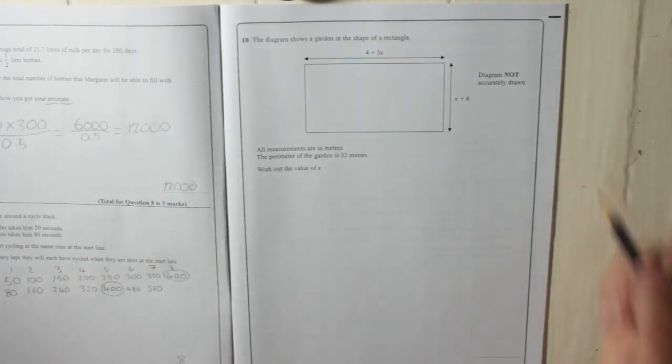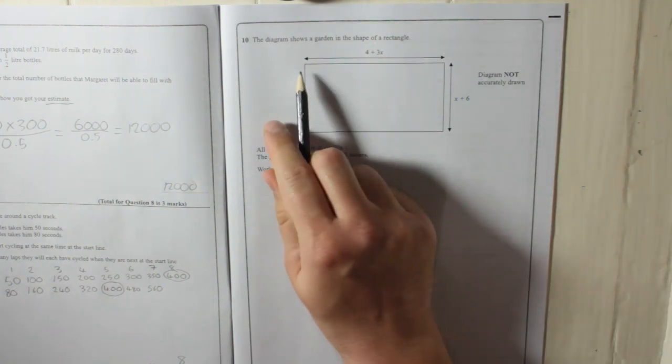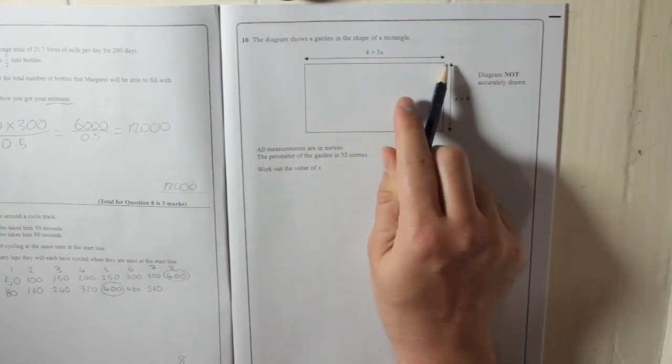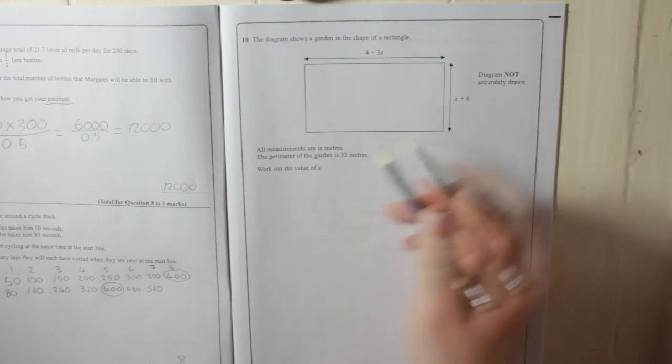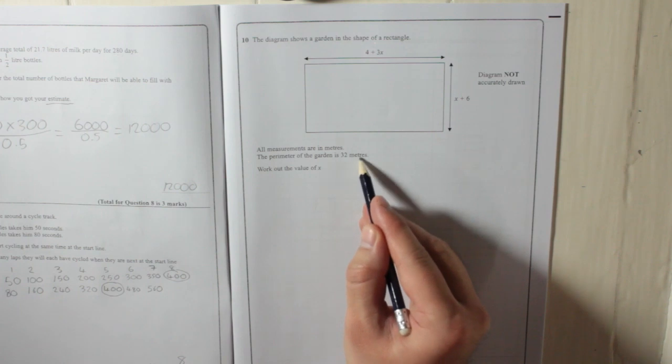Question 10. The diagram shows a garden in the shape of a rectangle. You've got, instead of two lengths, you've got 4 plus 3x, and you've got x plus 6. All measurements are in meters.